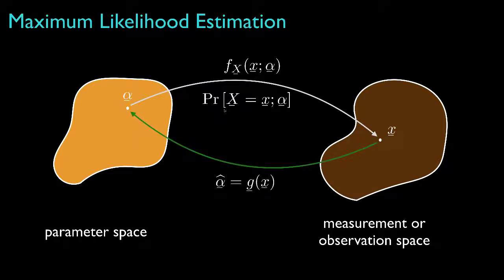And as with least squares estimation, our goal is to derive an estimator function, g, that processes the observation x to provide an estimate of the unknown parameter.